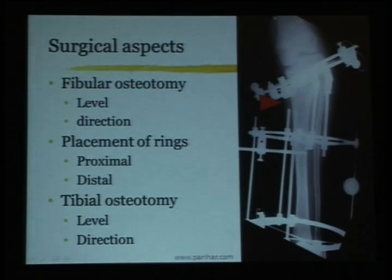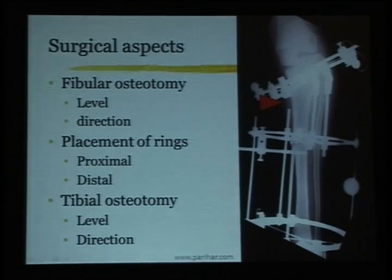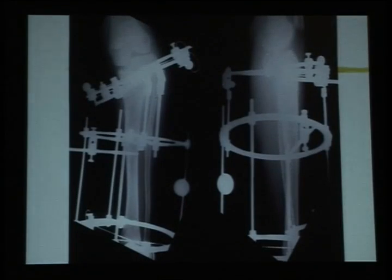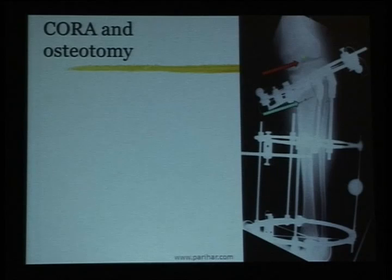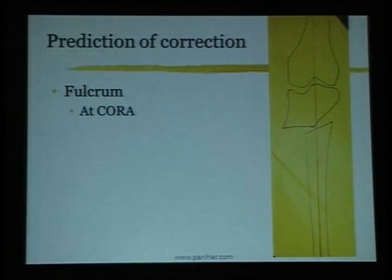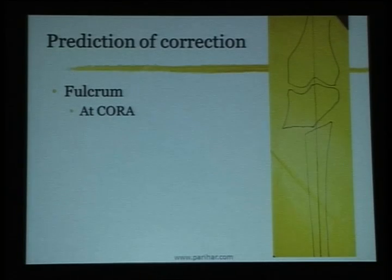Technically you can only do the osteotomy lower down because you need secure fixation in the proximal segment. We also do a fibular osteotomy. At each segment, you try to get the ring perpendicular to that segment — the proximal ring is parallel to the joint, the lower two rings are perpendicular to the shaft, and when these two rings come together, you will have correction.